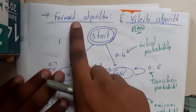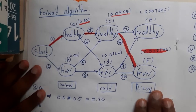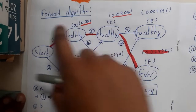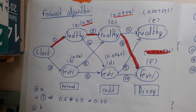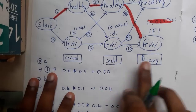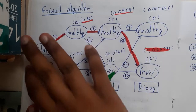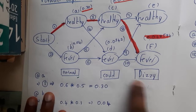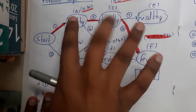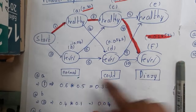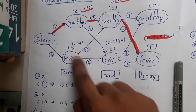First let us go through the Forward Algorithm, and after that we'll cover Viterbi. I've solved this problem clearly step by step because previously many of you were confused. In this problem, the observed outputs given are Normal, Cold, and Dizzy. We need to find the hidden pattern — which turns out to be Healthy, Healthy, Fever. That hidden pattern is what we need to calculate.